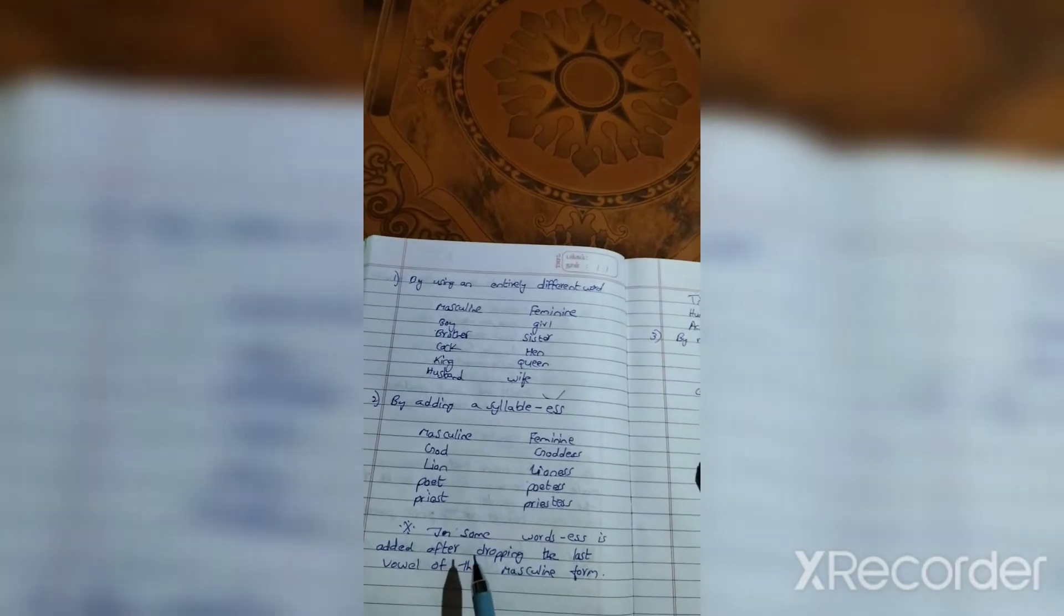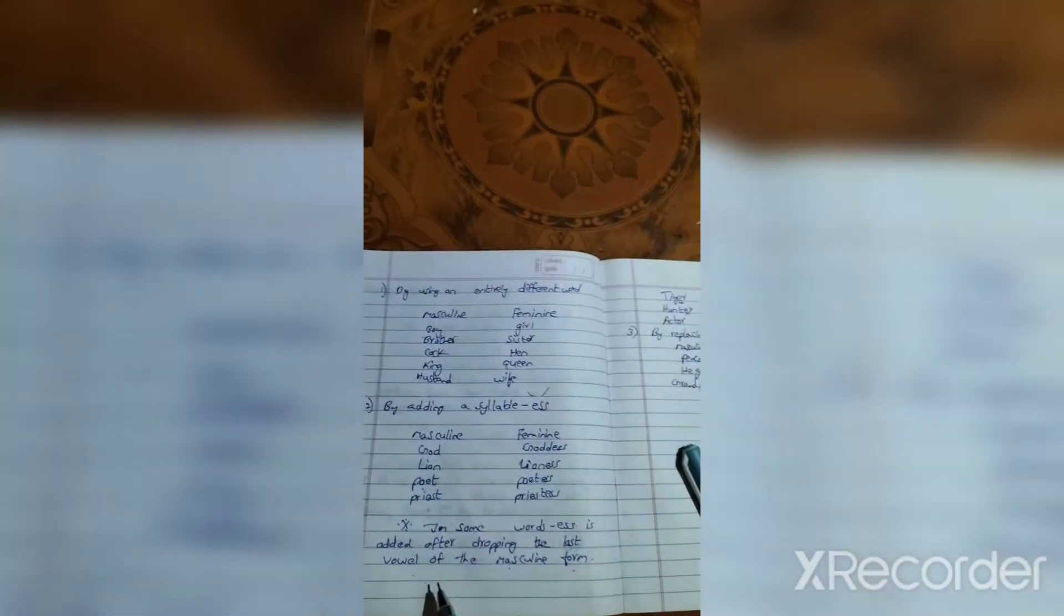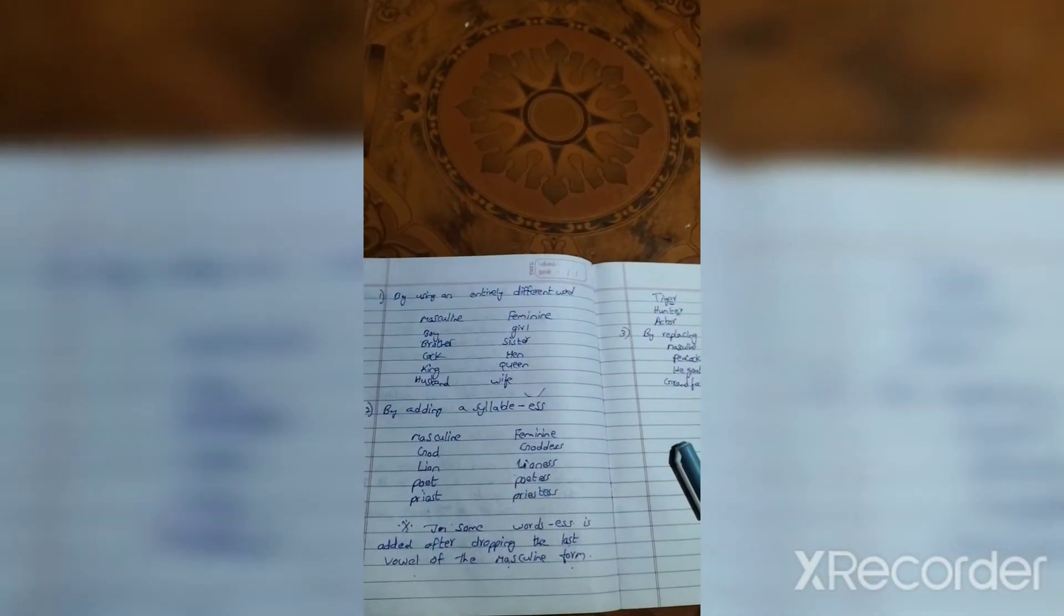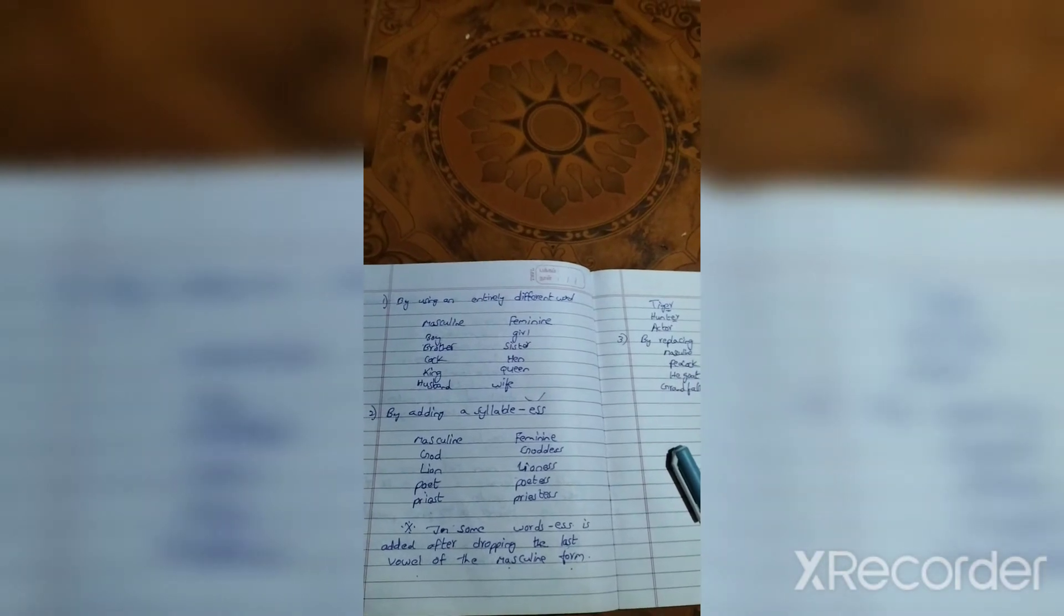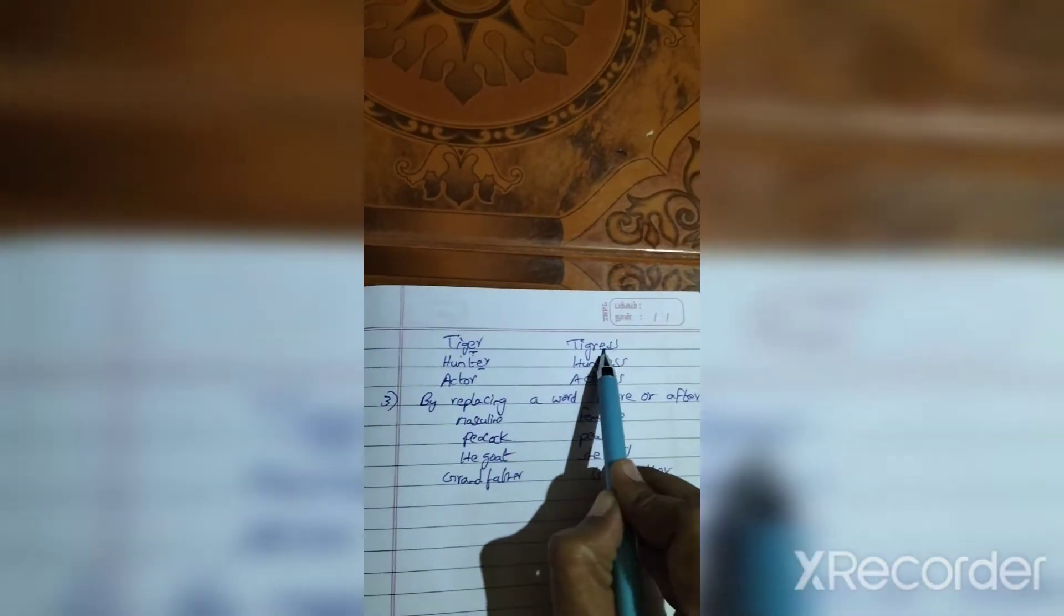In some words, 'ess' is added after dropping the last two vowels of the masculine form. Example: tiger - drop the last two vowels - tigress.